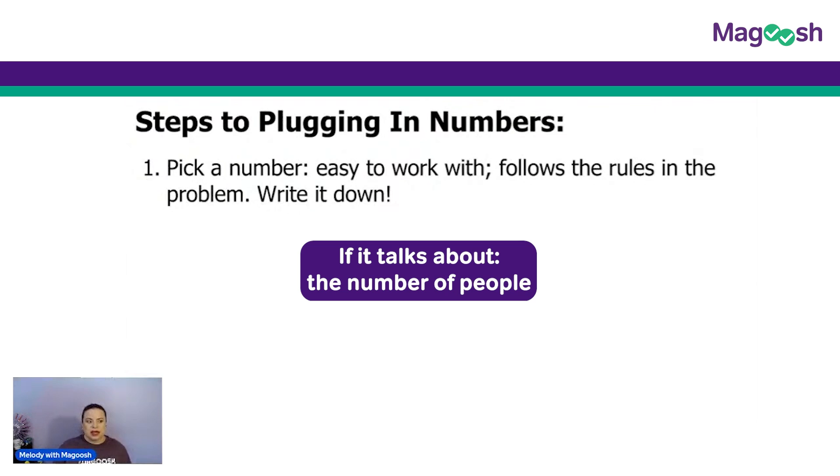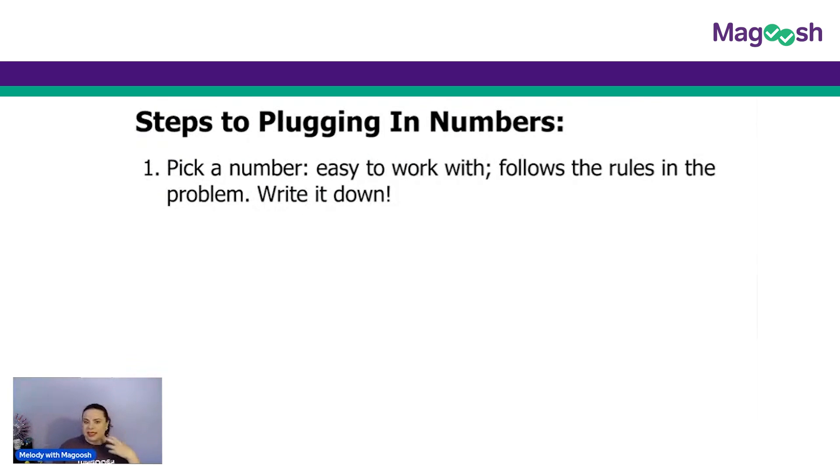Also, if it talks about something like the number of people or the price to buy an object, you have to use a little reasoning. Well, a number of people has to be a whole number. We're not going to say fractions. And if we're talking about the price of an object, we need a positive number.